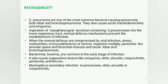Bronchopneumonia is almost always a secondary infection to lobar pneumonia — damage to the respiratory epithelium and excessive bronchial secretion from the primary infection leads to bronchopneumonia. Bacteremia and toxemia are common in early stages of infection. Toxemia is mainly due to diffusion of capsular polysaccharides, known as SSS — soluble specific substances.